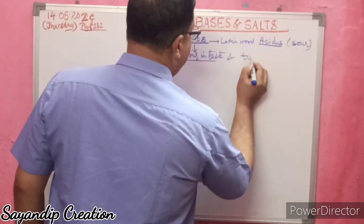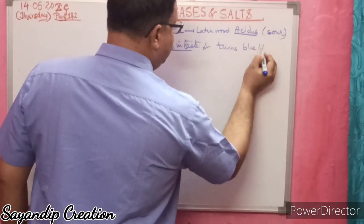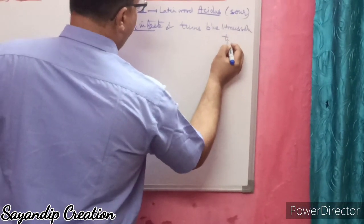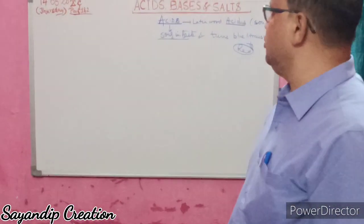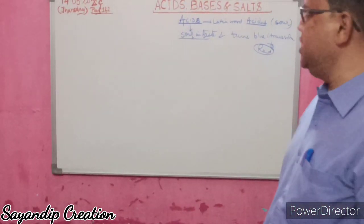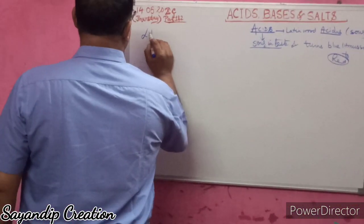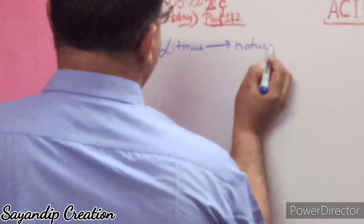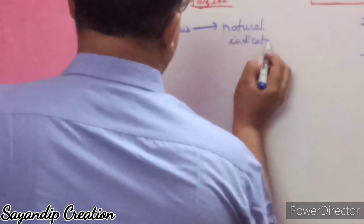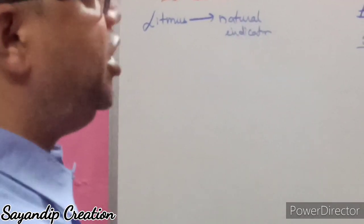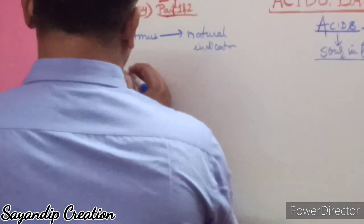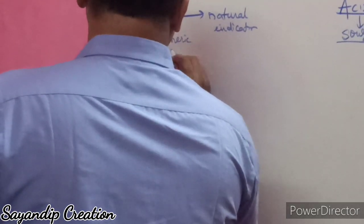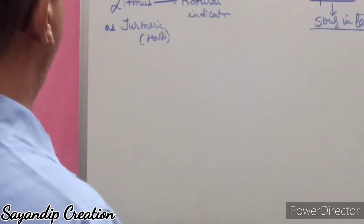Acids turn blue litmus solution or paper to red — the color change is from blue to red. Bases are substances which are bitter in taste and change red litmus to blue. Now, litmus is a natural indicator. An indicator is a substance which can be used to indicate whether an acid or a base is present in a solution.